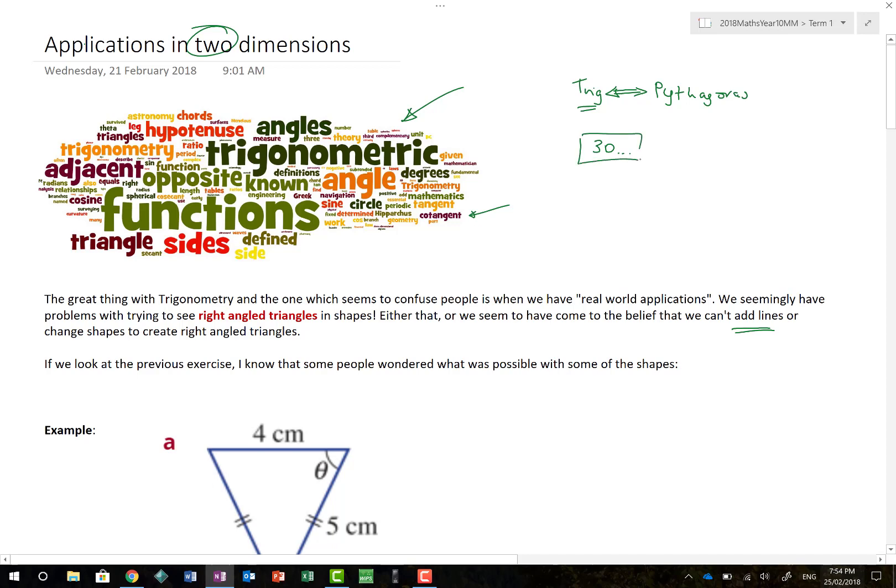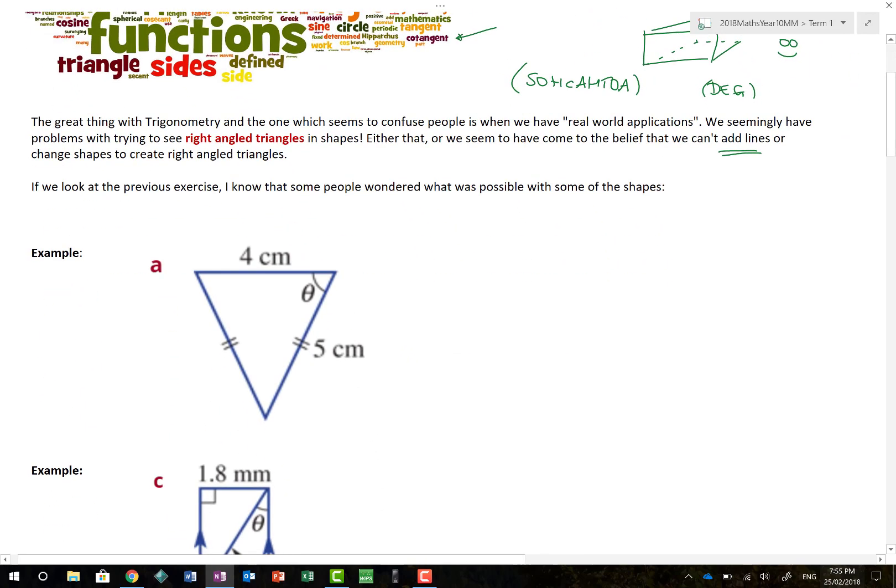But even with three-dimensional shapes, and that, for example, might be a cuboid, you don't have to worry. Because the great thing is, so long as you can find a right-angled triangle that you can extract from the diagram, once you've drawn that sketch of that right-angled triangle, your life is set. Why? Because, so long as you remember, then life can't get any more complicated. So long as you have your calculator in the right mode, and that is DEG, life gets really not complicated. So, what I'm saying here is, the great thing about trigonometry, and ones which seem to confuse people, is having real-world applications. We seem to find looking for right-angled triangles quite challenging. Either that, or we seem to have come to the belief that we can't add lines or change shapes.